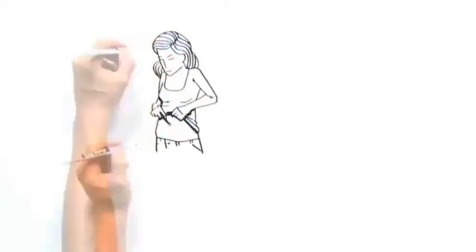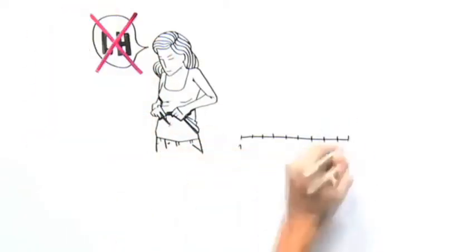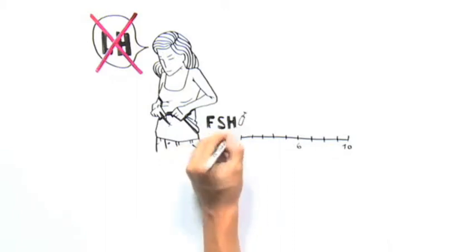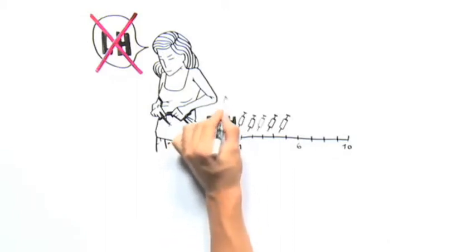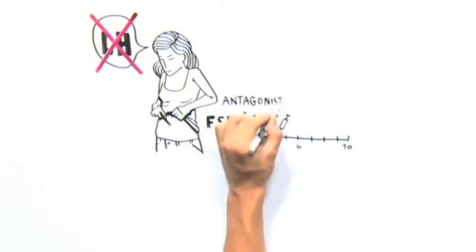Injections are started on the third day of menstruation. On average, 10 days of injections of FSH analogues will be necessary. Spontaneous ovulation is prevented by the use of GnRH antagonists, which are started on day 6.